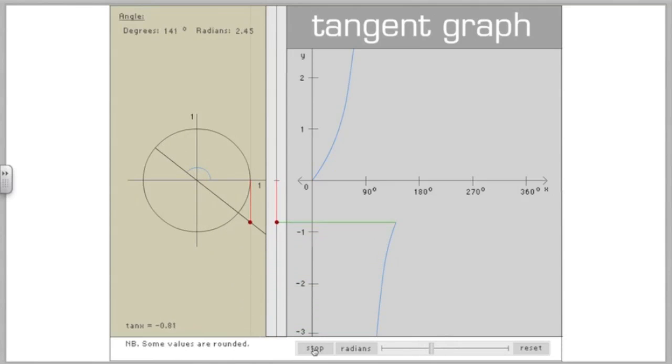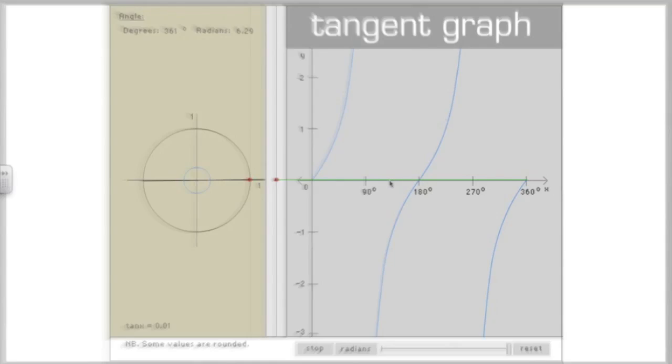So here we go, coming around to 180 degrees. Tan of 180 is going to be zero. And as we continue again, we're back to basically where we started from. 270 degrees. We've got the same problem where tan is undefined. Come back now to 360 degrees. So the tan function is a little bit different. Notice that the period of the tan function is 180 degrees, not 360 like the other graphs.